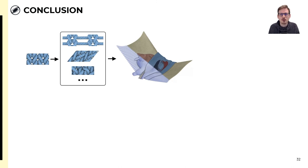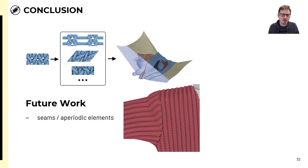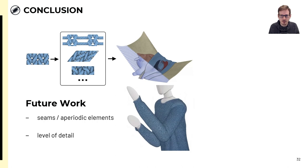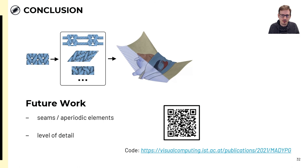So in summary, we pre-compute local yarn displacements for different deformations of a periodic pattern, which we then interpolate and add onto an animated cloth mesh. Our simplifying assumptions and heuristics, together with our GPU implementation, enable mechanics-aware yarn deformation in real-time at large scales. In the future, it would be interesting to incorporate aperiodic elements, such as seams between different knitting patterns or garment parts, but also investigating a level of detail both for more performance and against aliasing at large scales. The code for both pre-computation and online stages is publicly available via our project page. Thanks for your attention.